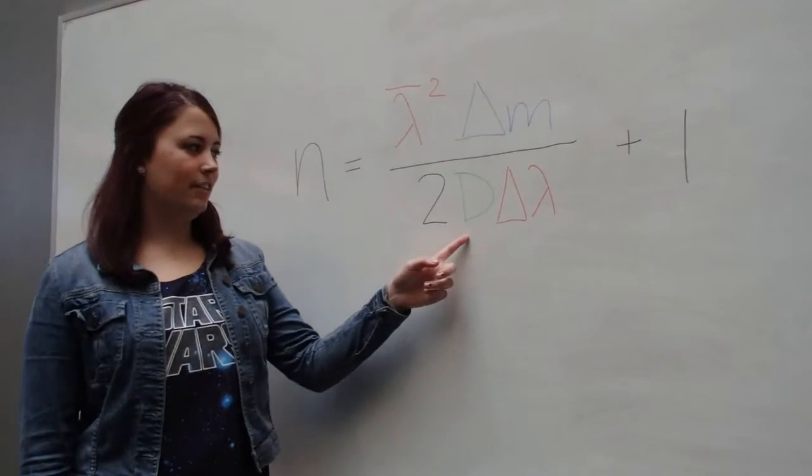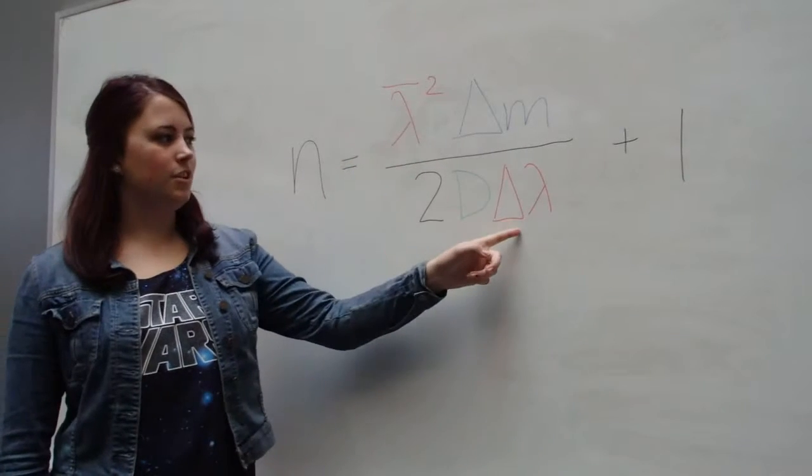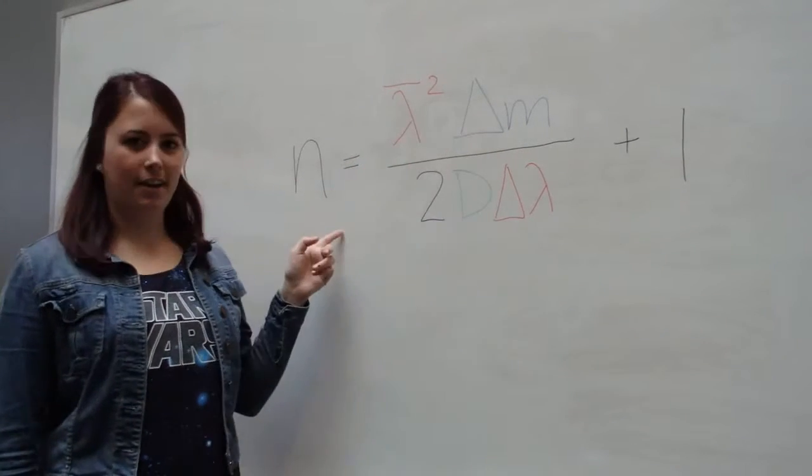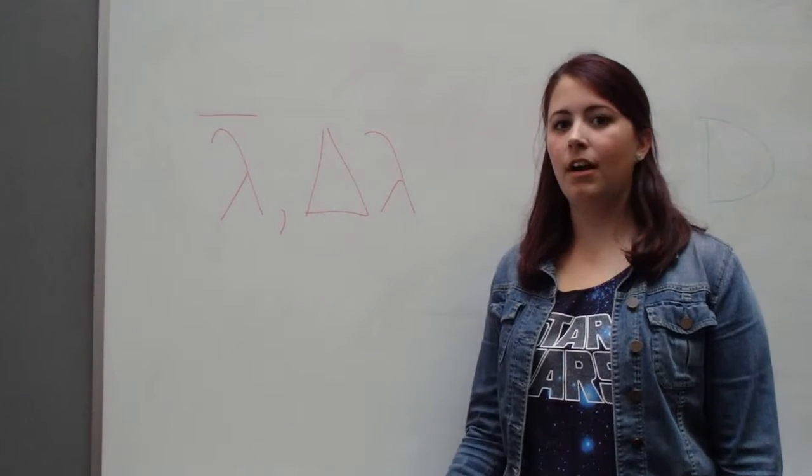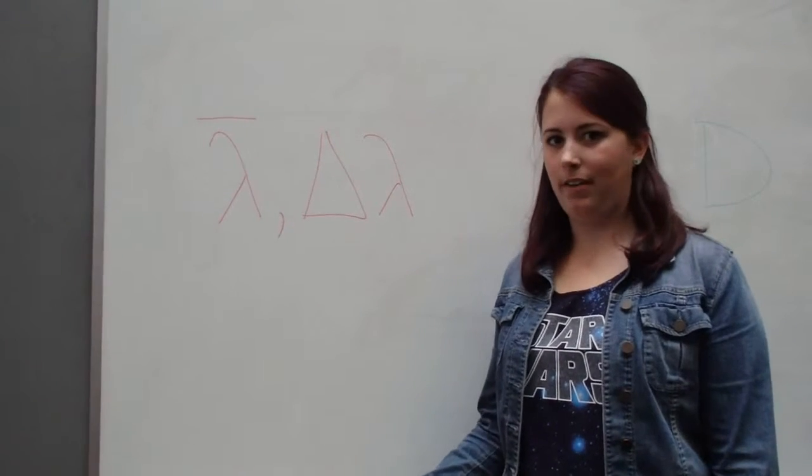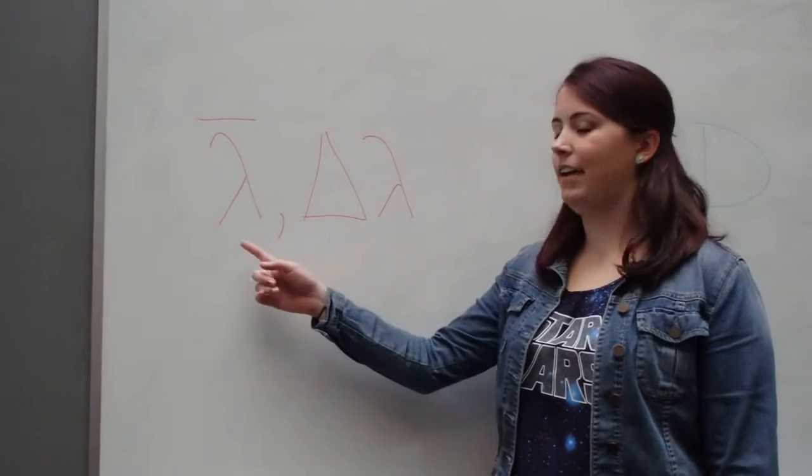Our derivation shows that we need to find the thickness of a sample, the average wavelength, the change in wavelength, and the change in fringe count to find it. We used a laser diode as our source and by changing current, we allowed mode hopping to occur and we analyzed this with an optical spectrum analyzer which allowed us to find delta lambda and average lambda.